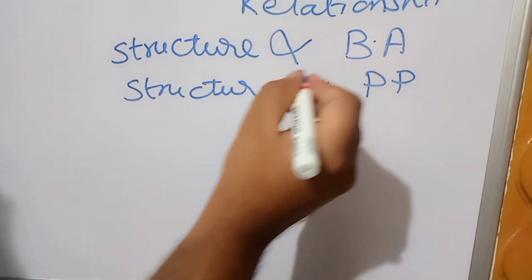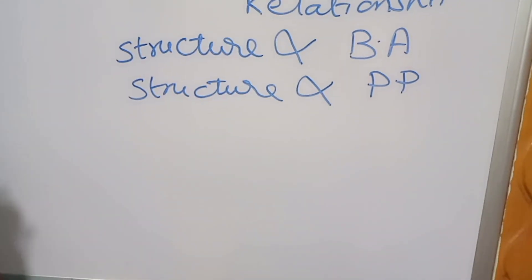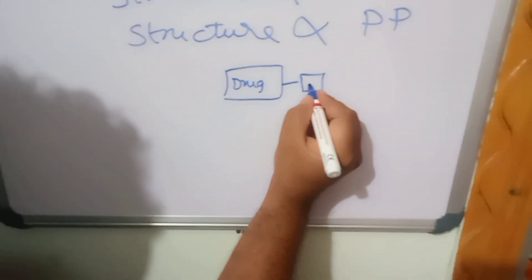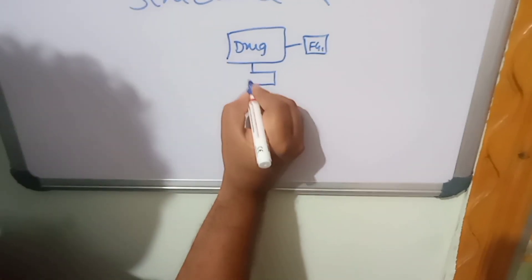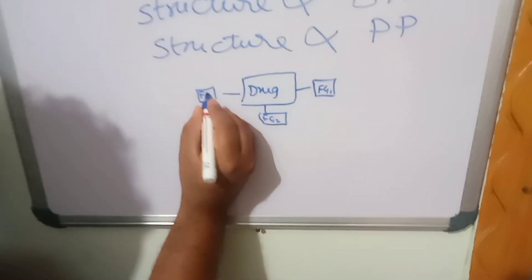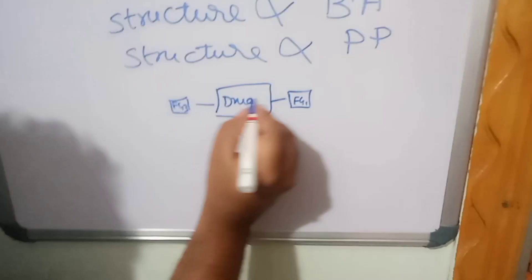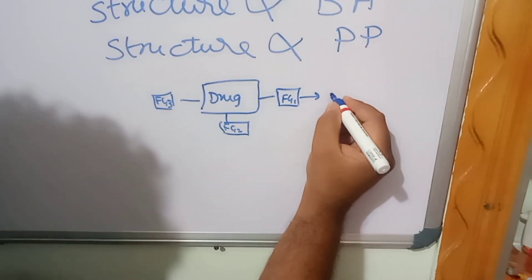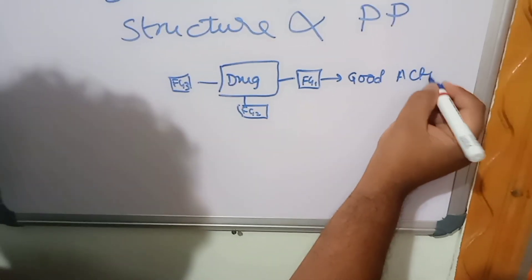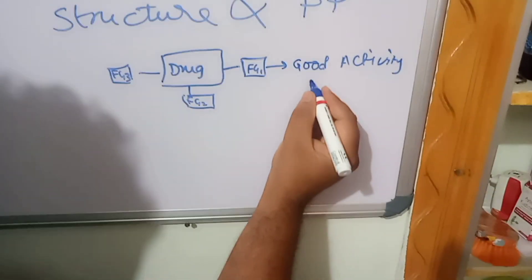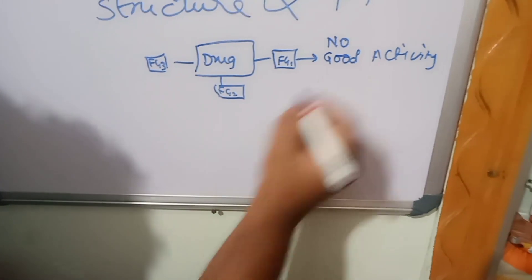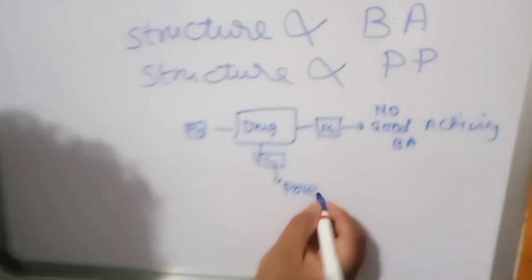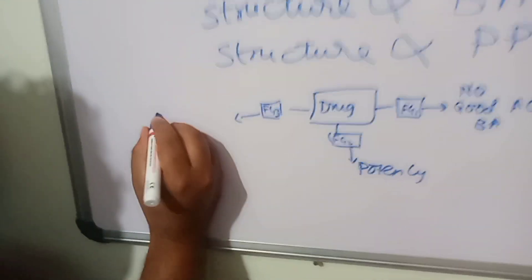What does it mean that chemical structure is proportional to biological activity or physical-chemical properties? For example, if you take any drug, it possesses certain functional groups — functional group 1, functional group 2, functional group 3. Suppose functional group 1 is not showing good activity, meaning a decrease in activity. Functional group 2 is showing potency — good activity. Functional group 3 is not showing good activity — no activity at all.